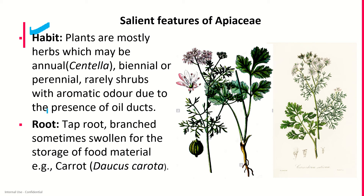Centella asiatica is widely used as a vegetable and medicinal plant. It is used to cure cholera, other forms of intestinal illnesses, madness, and a few forms of leprosy. Anethum species: the fruits are used as spice, condiment, and carminative. Cuminum cyminum: the fruits are aromatic and used as flavouring agents. Carum carvi: the fruits are used as condiments, stomachic, and carminative.